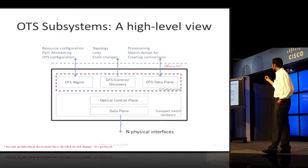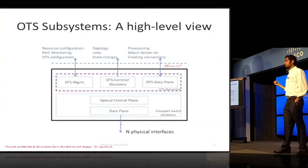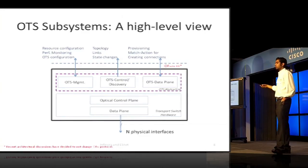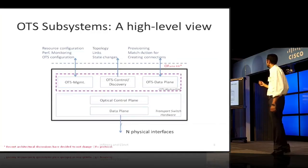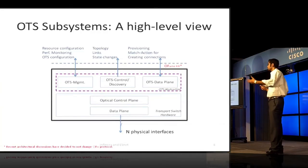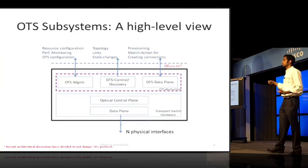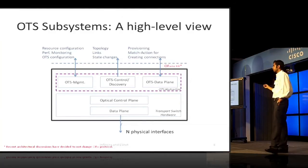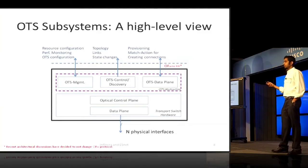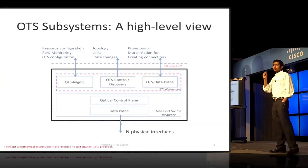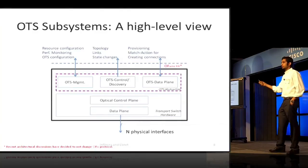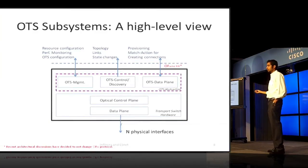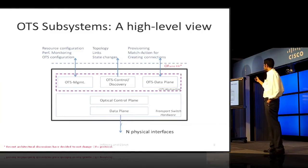The discovery agent is responsible for providing updates — for example, if there was a fiber cut, the connectivity of the graph changes, and somebody needs to be updating the controller about what changes are happening in the network. There is also a management portion, because transport network elements don't have a single abstract view that works for all vendors. Every vendor may have its own proprietary ways of exposing or managing things — such as equipment management or facilities — and that can happen through the management interface.